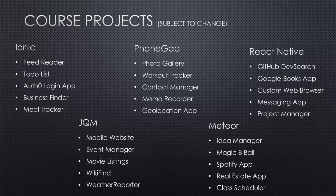For jQuery Mobile: a mobile website, an event manager, movie listings, Wikifind using the Wikipedia API, and a weather reporter application. And finally for Meteor: an idea manager, a magic eight ball application, a Spotify app using the Spotify API, a real estate application, and a class scheduler for college classes.